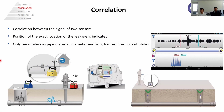For the correlation, I gave a brief introduction about how the principle works. For correlation, usually the signal of two sensors is used, which are placed on two accessible spots of a section of a pipeline where you assume the leakage is in between.